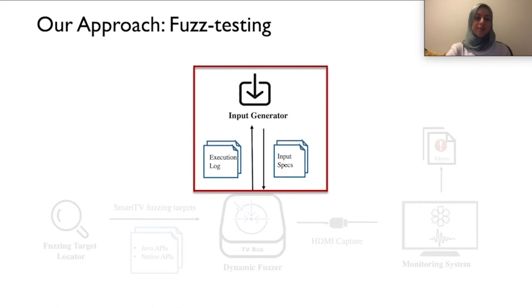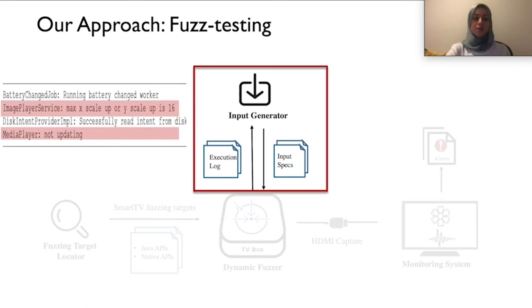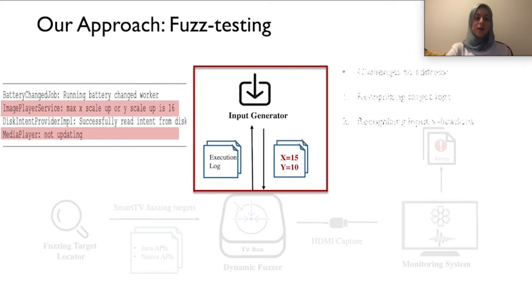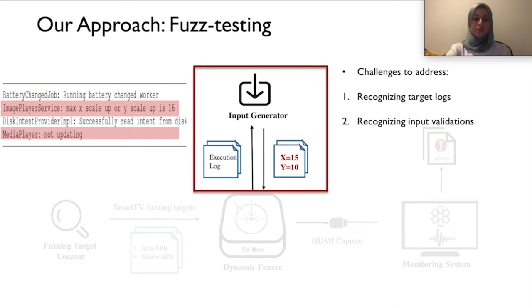Generating valid input specs via log analysis is challenging. Consider messages dumped while executing a target API — the red messages indicate that input is rejected because two argument values are larger than 16. Such information is clearly valuable and can be used by the fuzzer to generate smarter inputs. These messages present a few challenges: first, deriving messages uniquely triggered by a target execution is challenging because other messages are being dumped concurrently by other processes. Second, the rejection does not correspond to a standard exception but is in free text form.